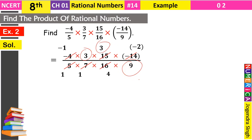अब numerator में 2 के साथ 3 है और denominator में 9 है। Numerator वाले 3 को 3 से cut किया → 1 मिला। Denominator के 9 को भी 3 से cut किया → 3 मिला। अब ऊपर 1 और 3 और नीचे 1 और 3 — इन दोनों को आपस में cut कर दिया, 3 ÷ 3 = 1 दोनों तरफ।